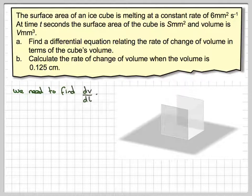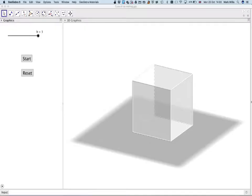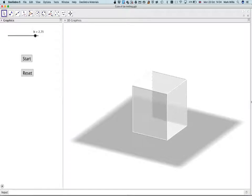We need to find dv by dt. Here we have our cube. If we just look at this using this GeoGebra applet, here we've got our cube, and what's happening is it's melting at a constant rate, so the area is changing at a constant rate. You can see here it's actually melting. In this applet, I will attach to the notes of the video, so eventually it will melt down to nothing.